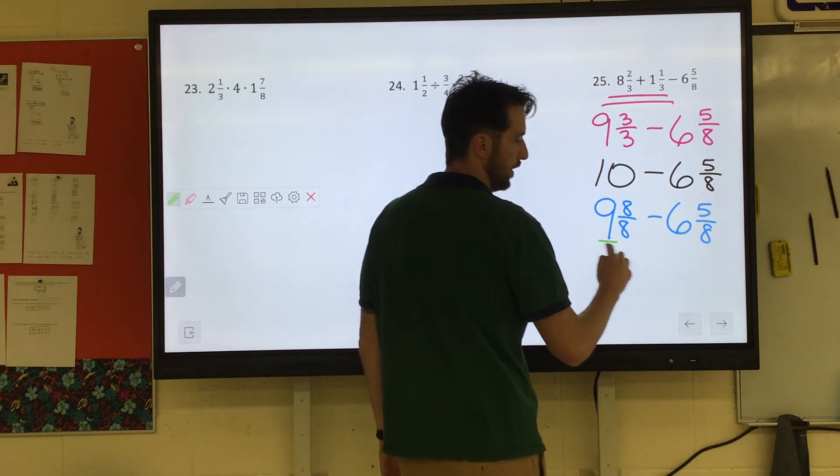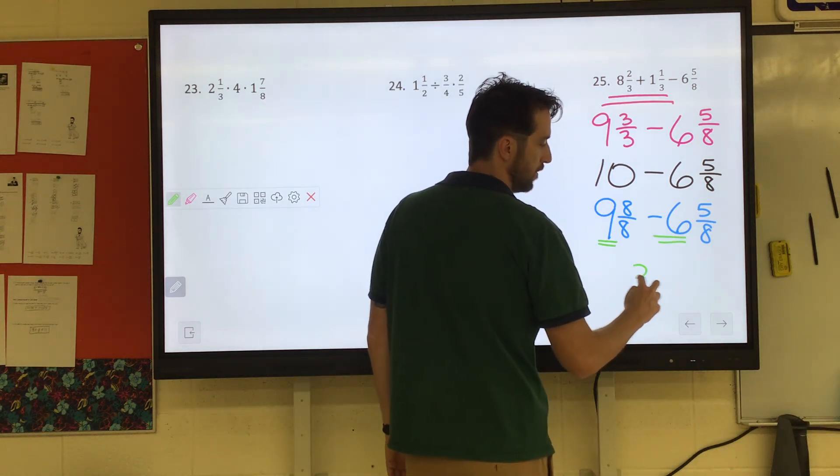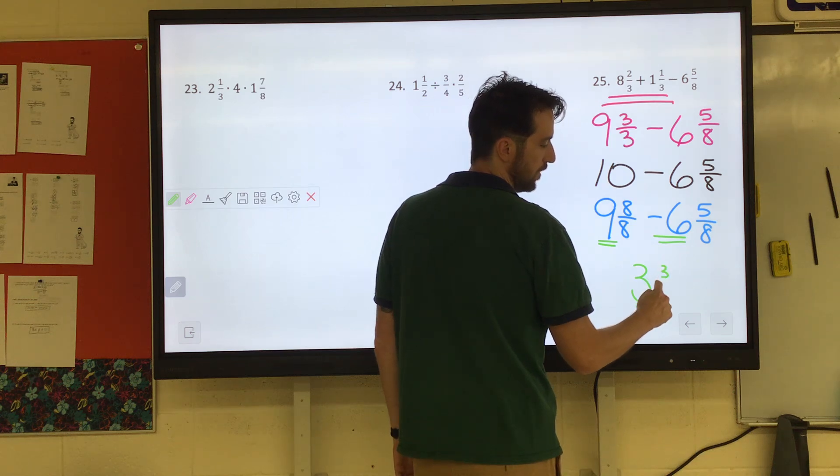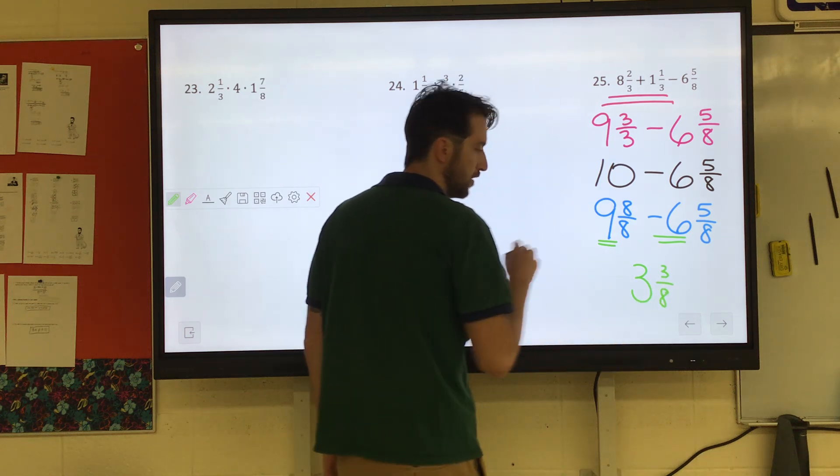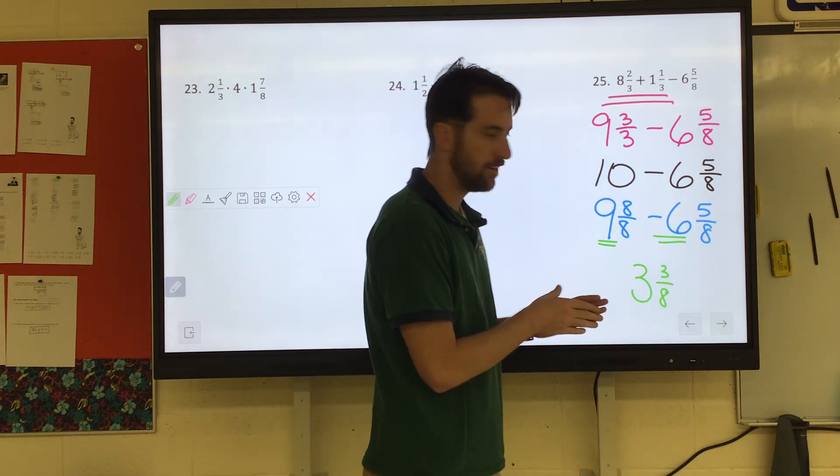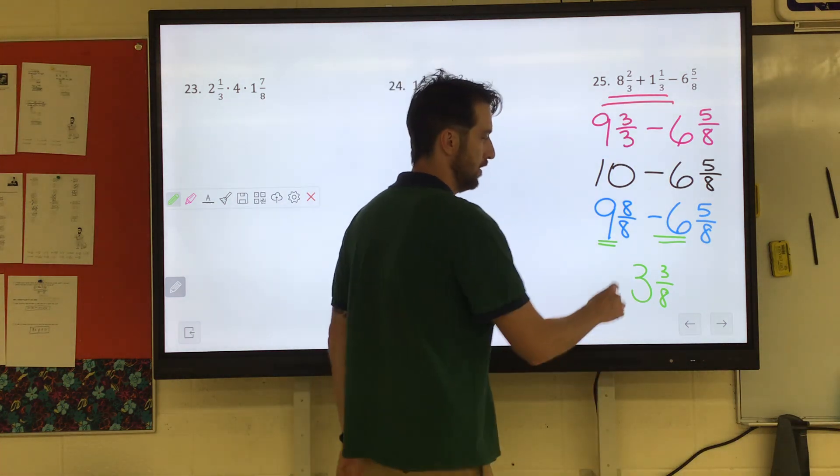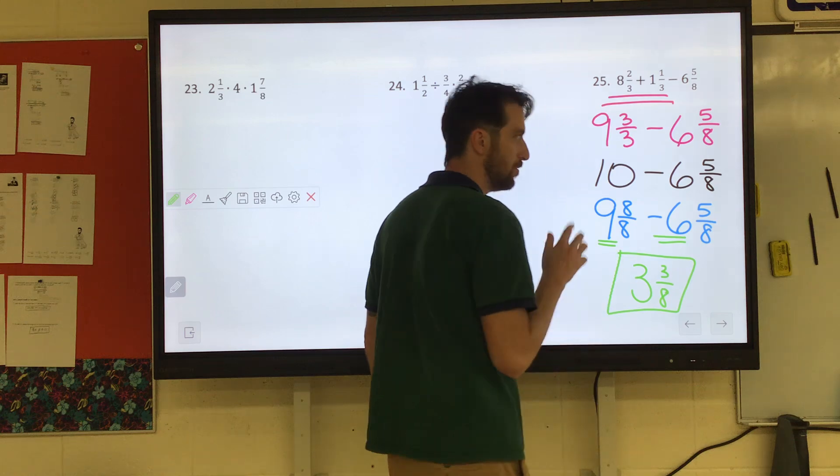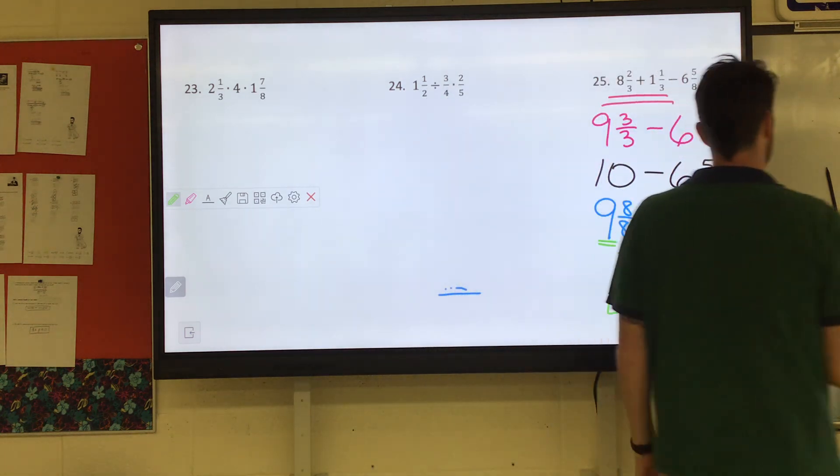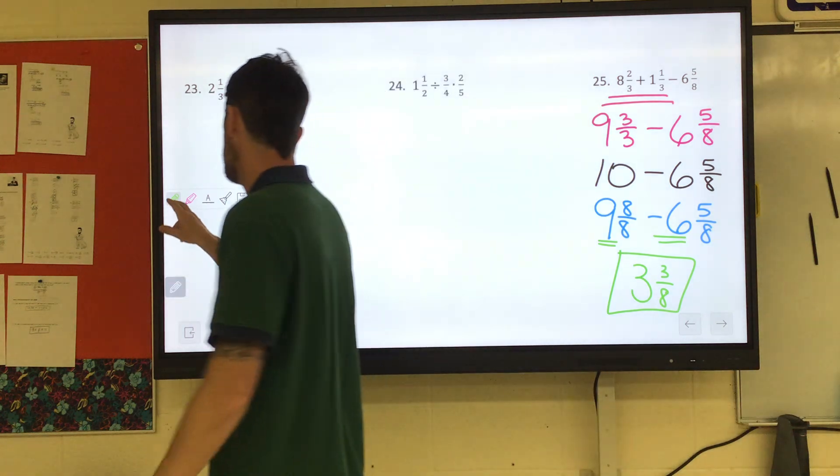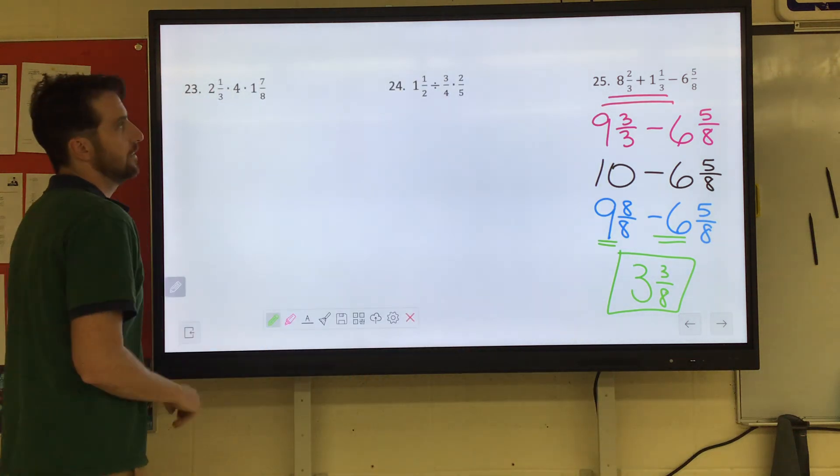That's equivalent with 10. And that'll allow us to do this subtraction. So we have nine and eight eighths minus six and five eighths. Now it's all eighths, baby. So we'll subtract the big guys. Nine minus six is three. Eight eighths minus five eighths would be three eighths. You double check. Can you simplify that? Nothing goes into three and eight. So we're all good. That's our final answer there. And that was a brutal problem. So if you were following along with that, man, you're good.